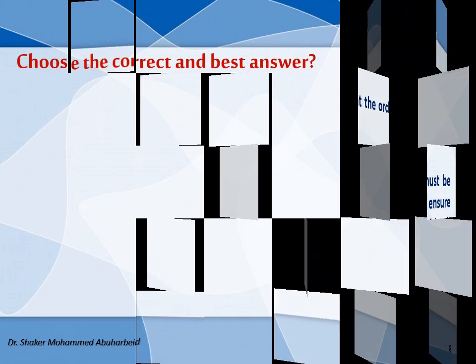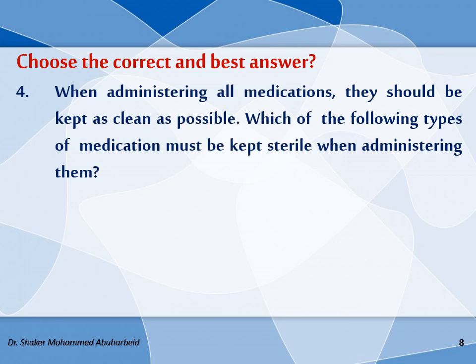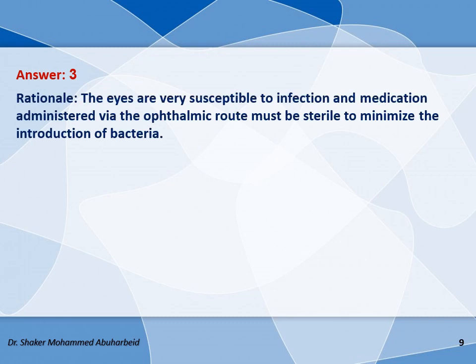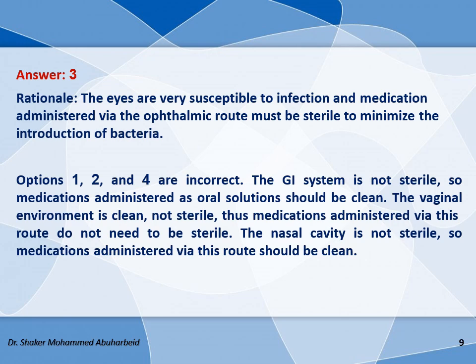Now let us see the fourth question. When administering all medications, they should be kept as clean as possible. Which of the following types of medication must be kept sterile when administering them? Options: oral solutions, vaginal irrigations, ophthalmic solutions, or nasal installations. The answer is three. The eyes are very susceptible to infection, and medications administered via the ophthalmic route must be sterile to minimize the introduction of bacteria. Options one, two, and four are incorrect: the GI system is not sterile, so oral solutions should be clean; the vaginal environment is clean, not sterile, so medications via this route don't need to be sterile; and the nasal cavity is not sterile, so medications administered via this route should be clean.